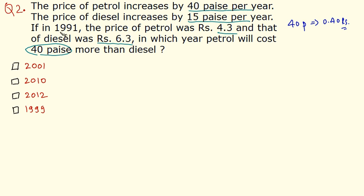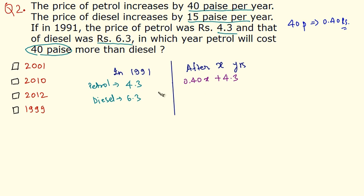Let's write down what was there in 1991 and what will be there after X years. In 1991, petrol was Rs. 4.3 and diesel was Rs. 6.3. Now X years have passed by. It increases by 40 paise per year, so we have 0.40x plus its original price plus 4.3. Price of diesel increases by 15 paise per year, so after X years it is 0.15x plus its original price which is 6.3.